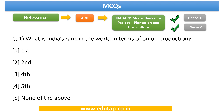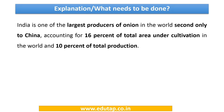Question one asks: what is India's rank in the world in terms of onion production? It is a very direct question — the answer is second. The country that stands first in the world in terms of onion production is China, and after that India stands second. India accounts for nearly 16% of the total area under onion cultivation, and in terms of total production it is 10% of the total.